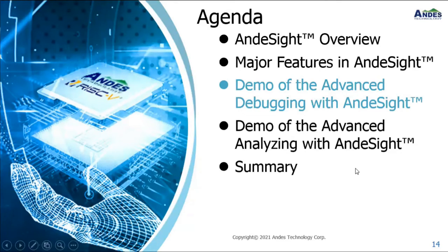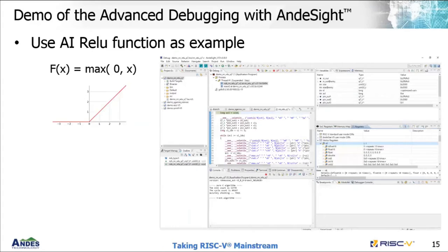I'd like to show you a demo of some advanced debugging features you can use with AndesITE. For this we will use the AI ReLU vector demo — the ReLU activation function is most commonly used in deep learning. The function returns zero if the input is negative, or returns the positive input value. We will run this demo and show more AndesITE debugging features.